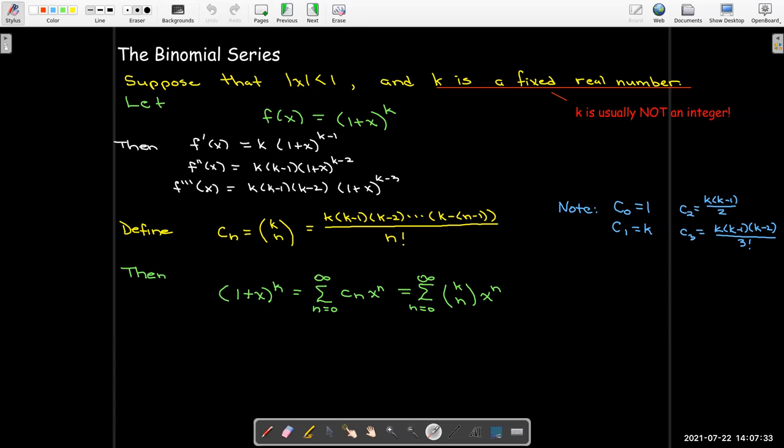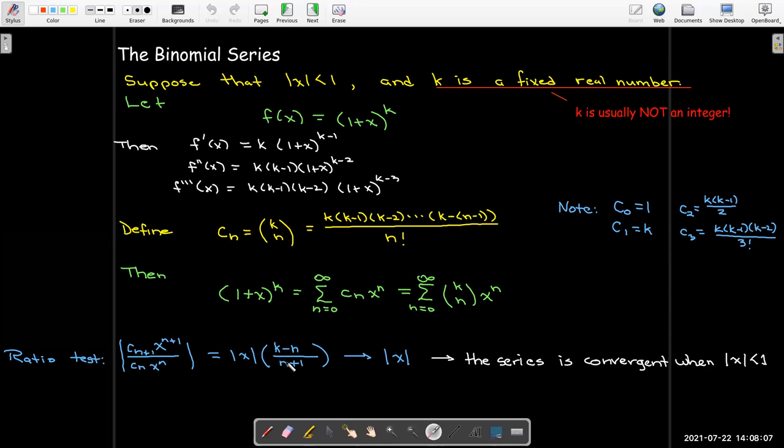To show why we can only use absolute value of x less than 1, let's look at the ratio test. If I look at the absolute value of the ratio of consecutive terms, it simplifies to absolute value of x times the fraction k minus n over n plus 1, and as n goes to infinity that goes to the absolute value of x. And so by the ratio test we will get convergence when the absolute value of x is less than 1.